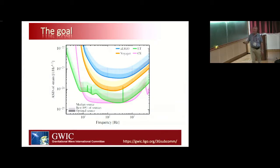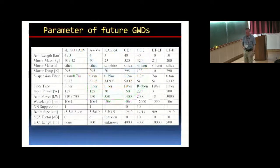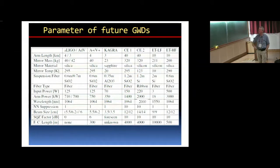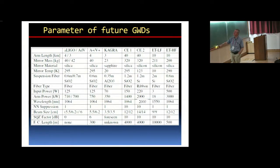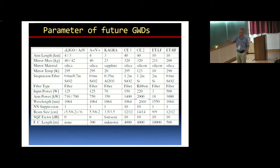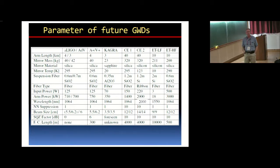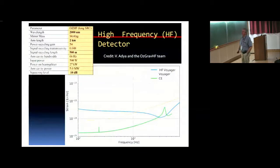There are key parameters we're after: mirror masses go up from 40 to around 300 kilograms, mirror materials change from silica to silicon, operating powers go right up, squeeze factors go from 6 up to 10 dB, Newtonian noise suppression by factors of ten, and so on. These are the key enabling technologies to focus on to avoid these fundamental noise sources. There's also an effort to look at what can be done in four-kilometer existing facilities or new focused facilities.